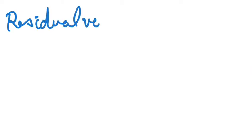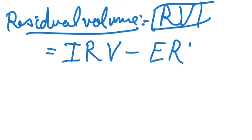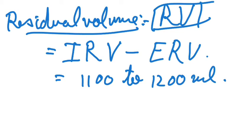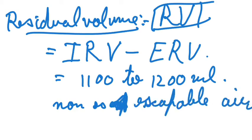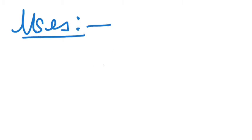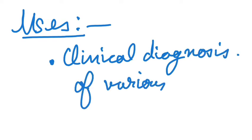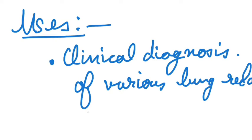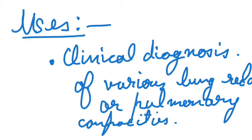Next we have residual volume, which is the volume of air remaining in the lungs even after a forceful expiration. From the previous definitions, inspiration minus expiration comes out to be around 1100 to 1200 ml — this is the residual volume, which always stays in our lungs and is non-escapable air. These terms are used in clinical diagnosis of various pulmonary diseases, or to measure the pulmonary capacity of a person.